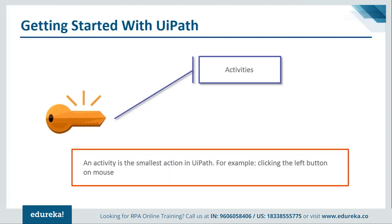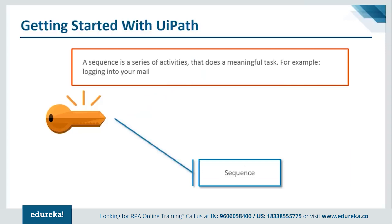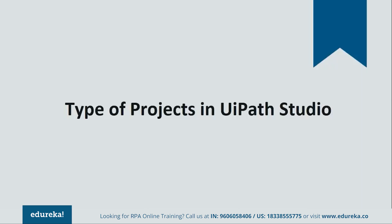The second key concept is a sequence. When you combine activities, they lead to a meaningful task. For example, to shut down a computer you click Start, then click Shut Down — combining those activities creates a sequence. Whenever activities are combined to achieve a meaningful task, that combination is called a sequence. These two terms — activity and sequence — will be used frequently when working with UiPath.